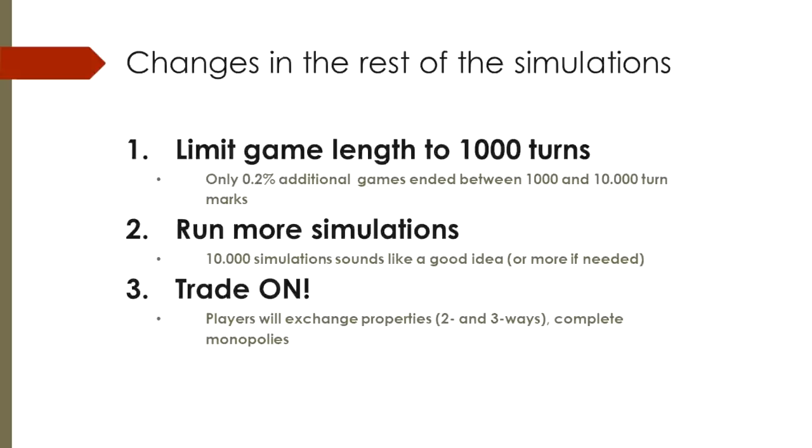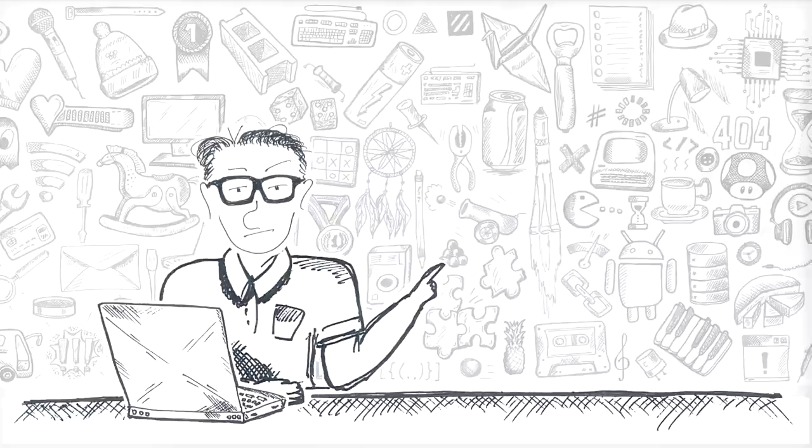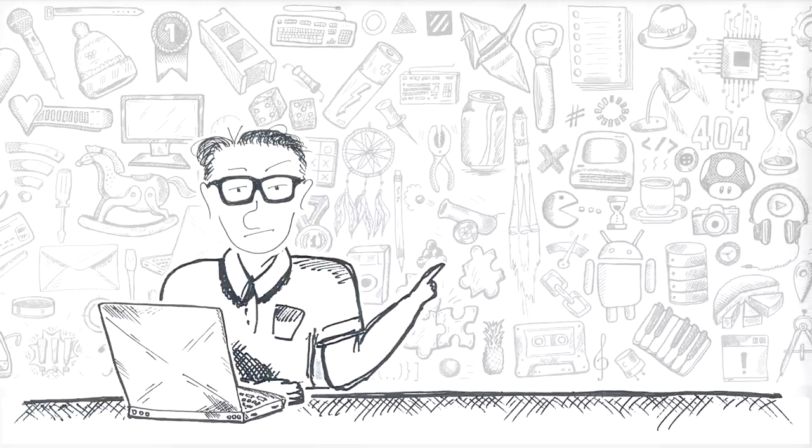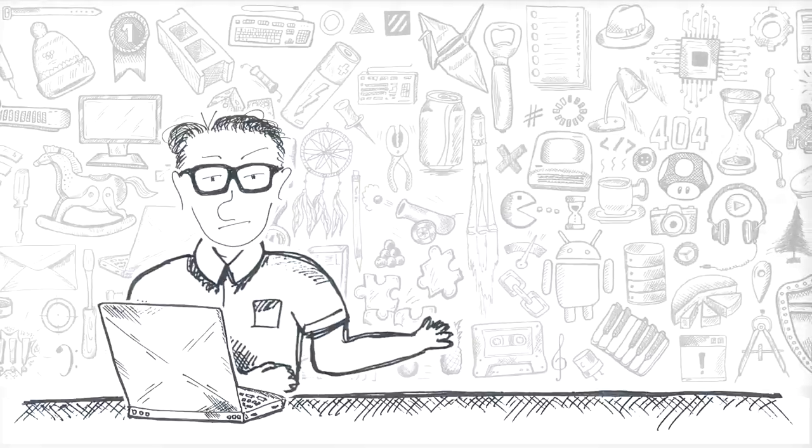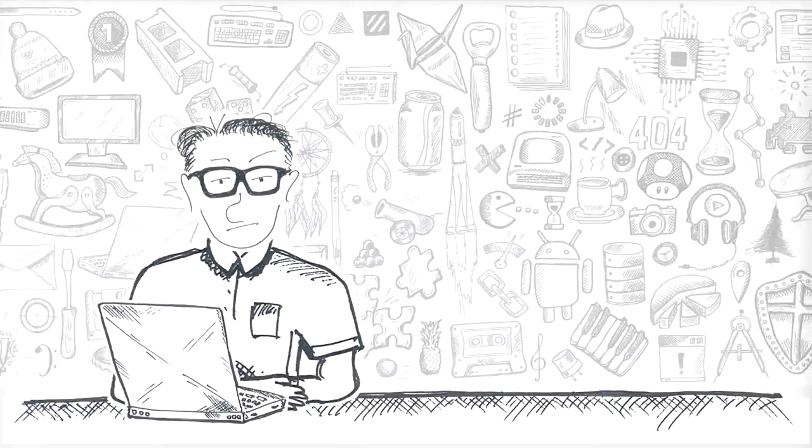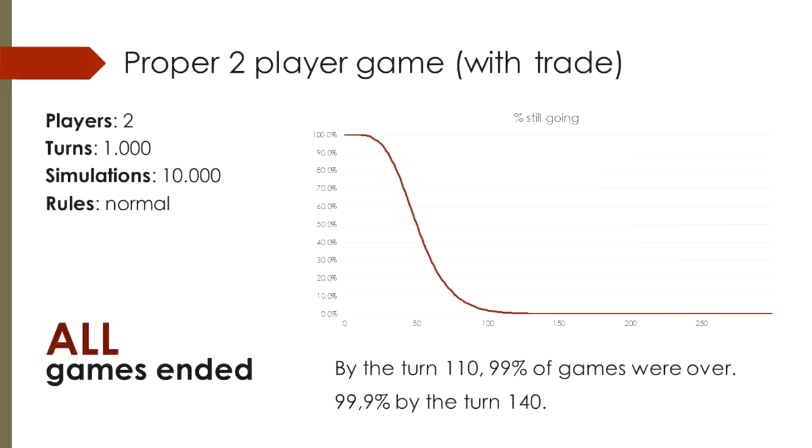And most importantly, as I mentioned before, in my simulation, players can and will trade. And with exactly this, let's start our first simulation. Same two players are at the Monopoly board, but now they will be trading. How many games will end in a stalemate now? And results are in. None. That's right, if players in a two-player game are willing to trade, they are bound to have an end to their game.